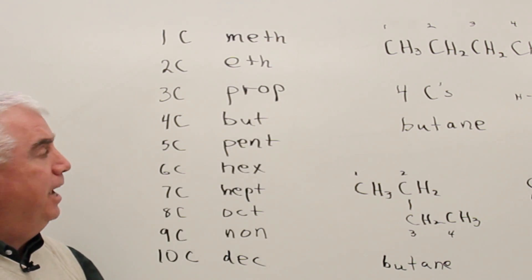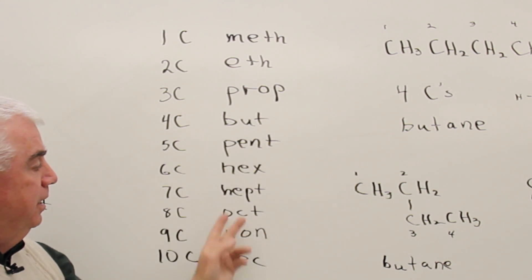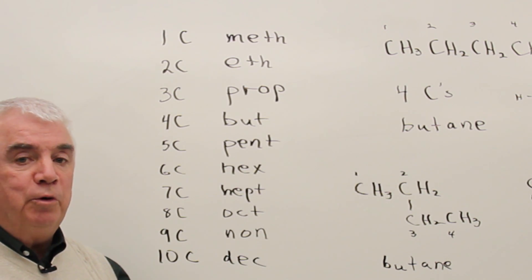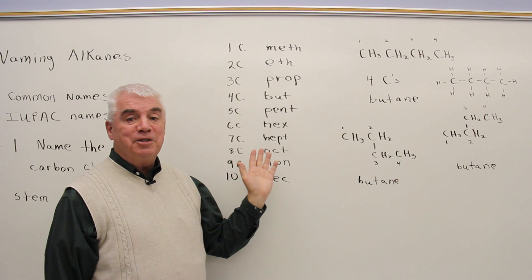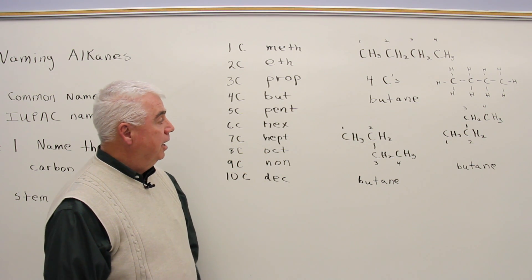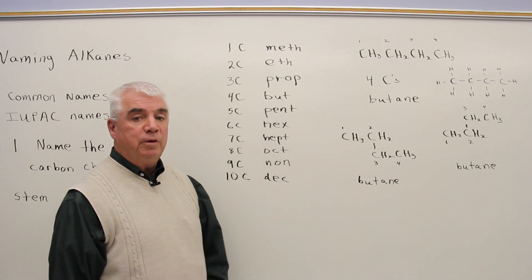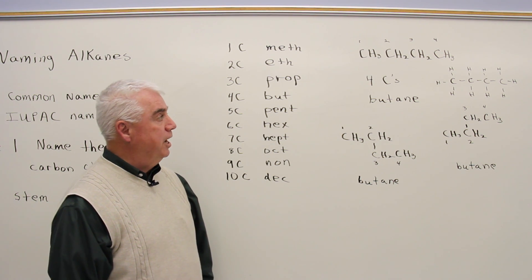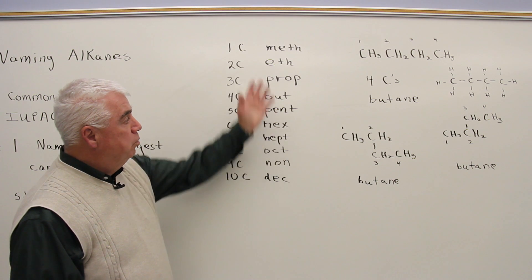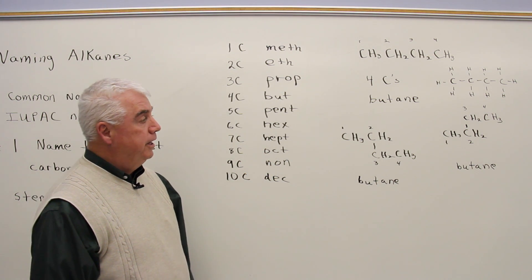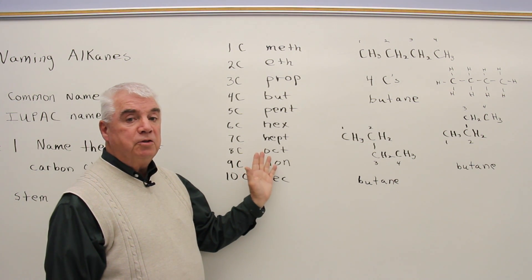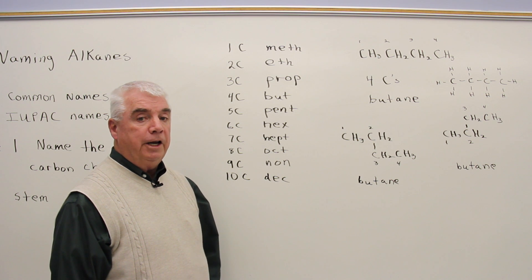Two carbons is ethane, three propane, butane, pentane, hexane, and so on, down through decane. You could memorize these. You could put this, this would be a great thing to put on the sheet that you take with you into the exam. And we use this all the time in naming not only alkanes, but the other families of organic compounds.